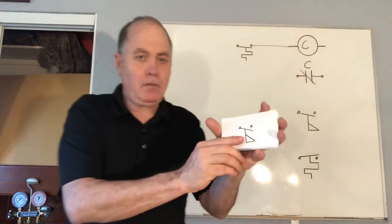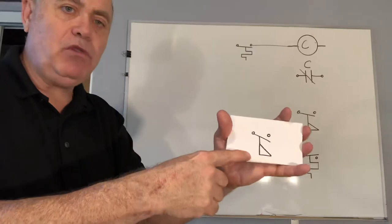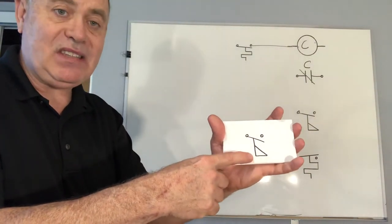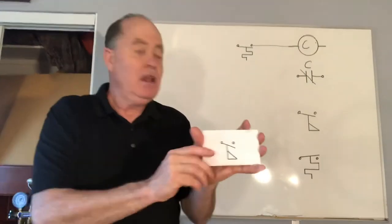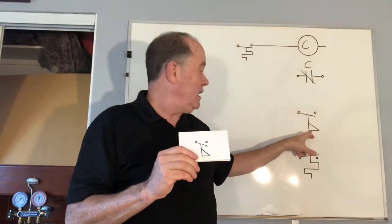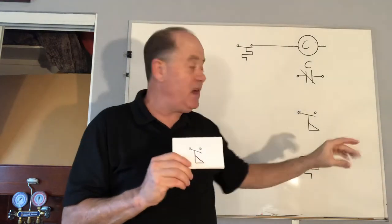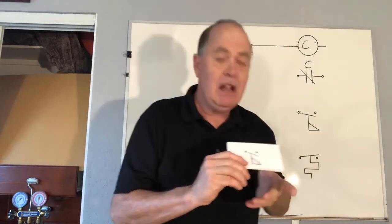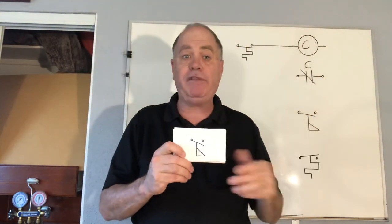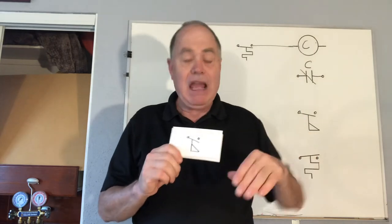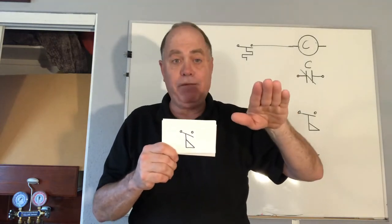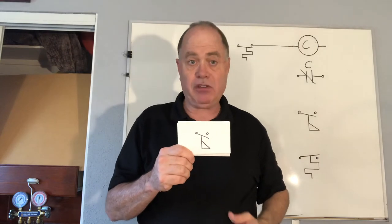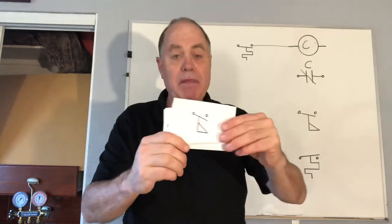The flow switch is also known as a paddle switch or sail switch because it makes with flow of fluid — either vapor or liquid. For air flow, a fan running lifts the sail up and it closes the contacts. With something like a chilled water pump, when the pump is energized a paddle switch confirms water flow, and then we're allowed to bring on the compressor to make chilled water. So a flow switch makes with flow, whether sail or paddle.